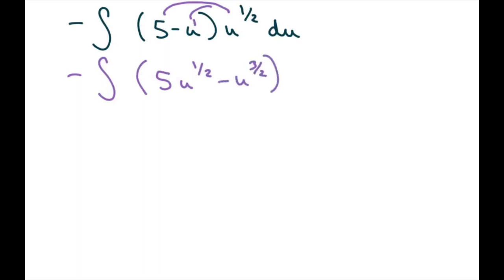So then we're going to integrate. I have negative 5 minus u, u to the one half du. Now what I want to do is distribute here to simplify, so you're going to get 5 u to the one half minus u to the three halves du.